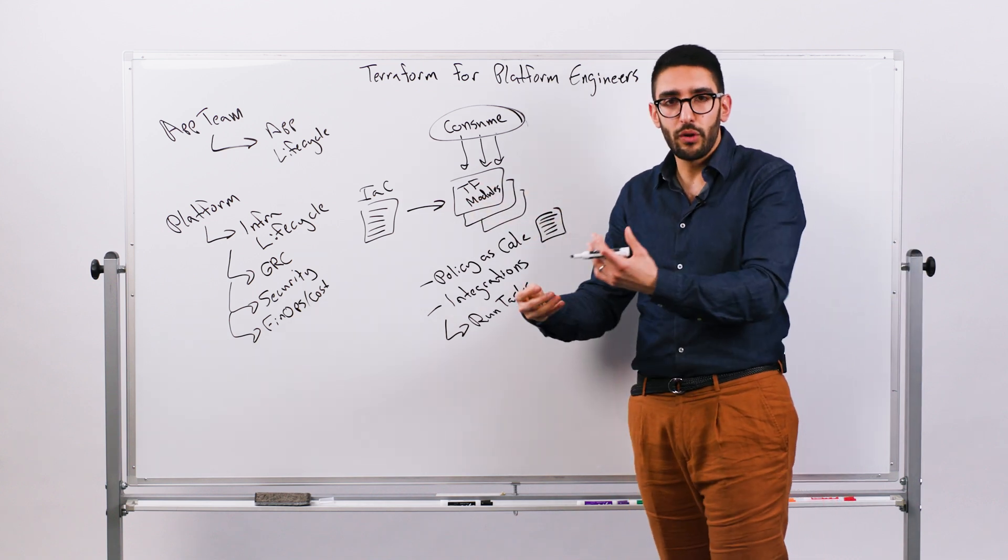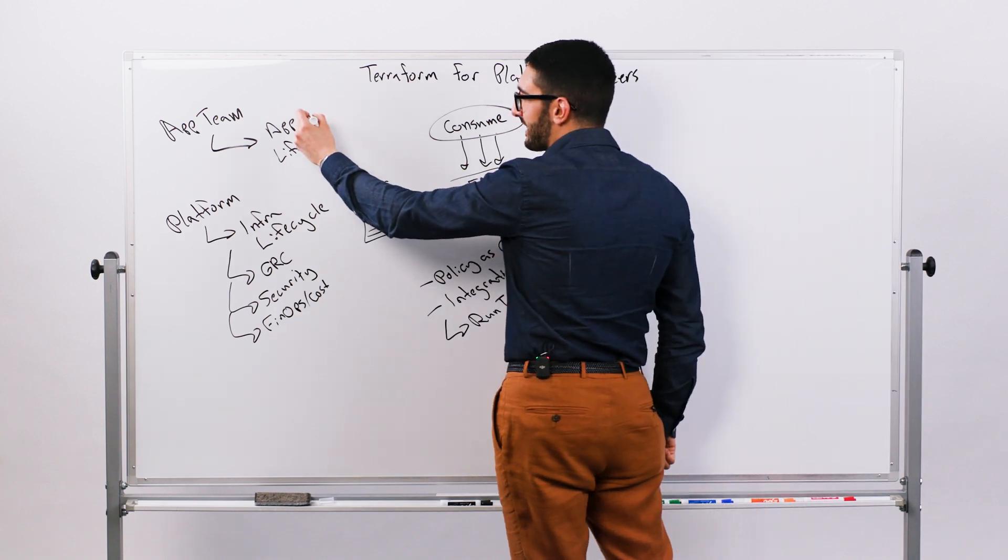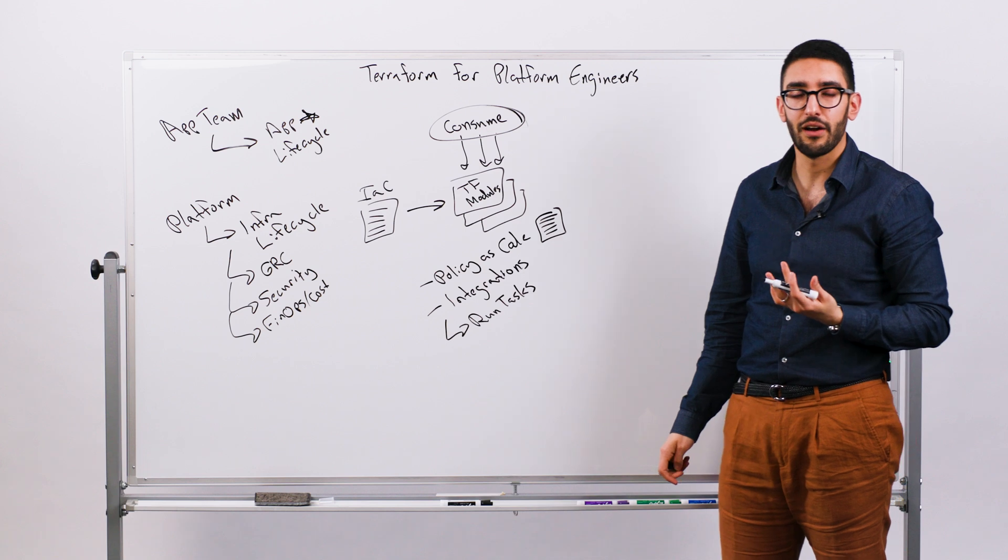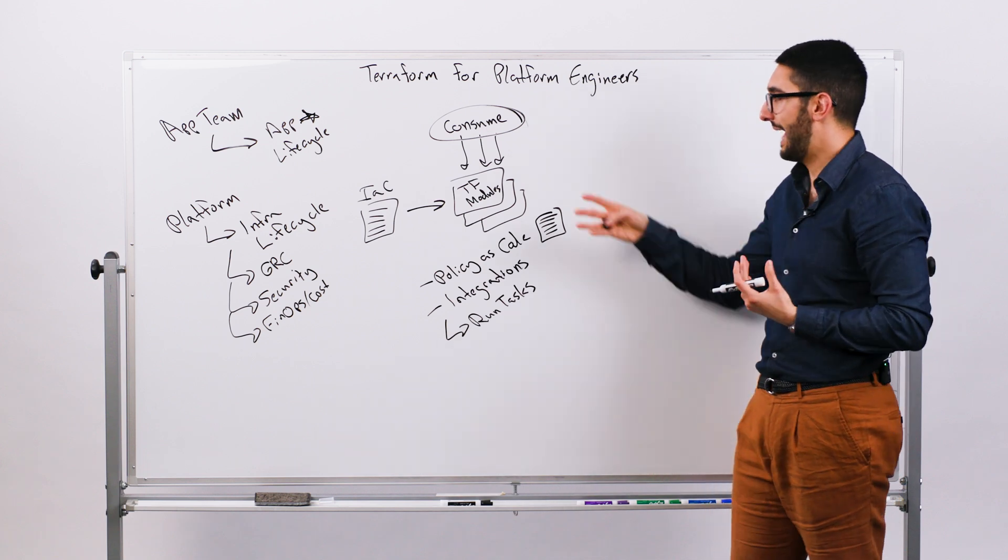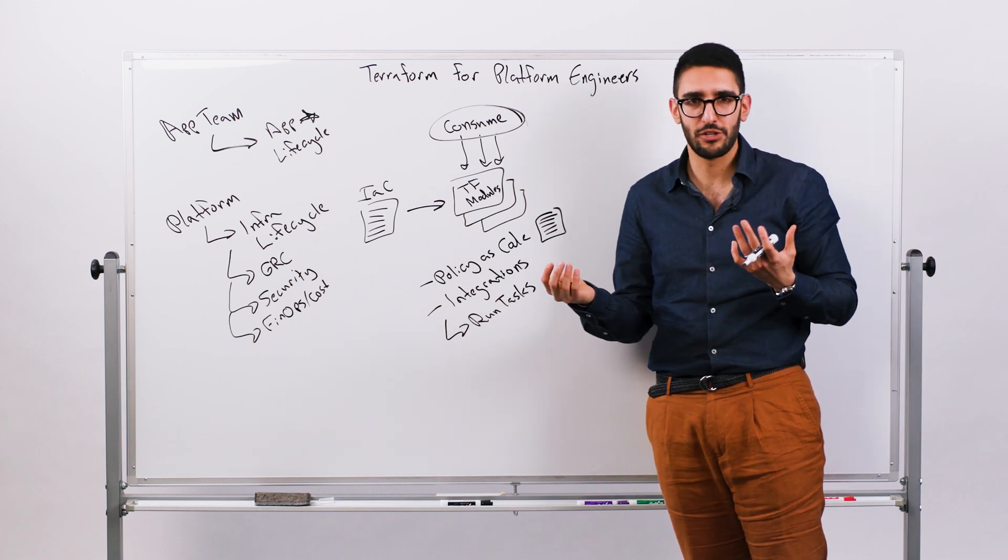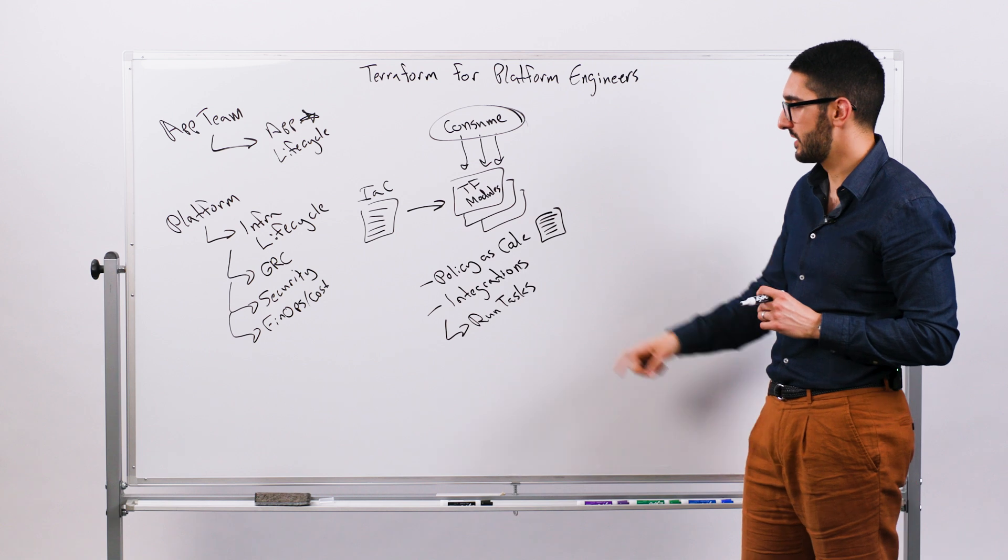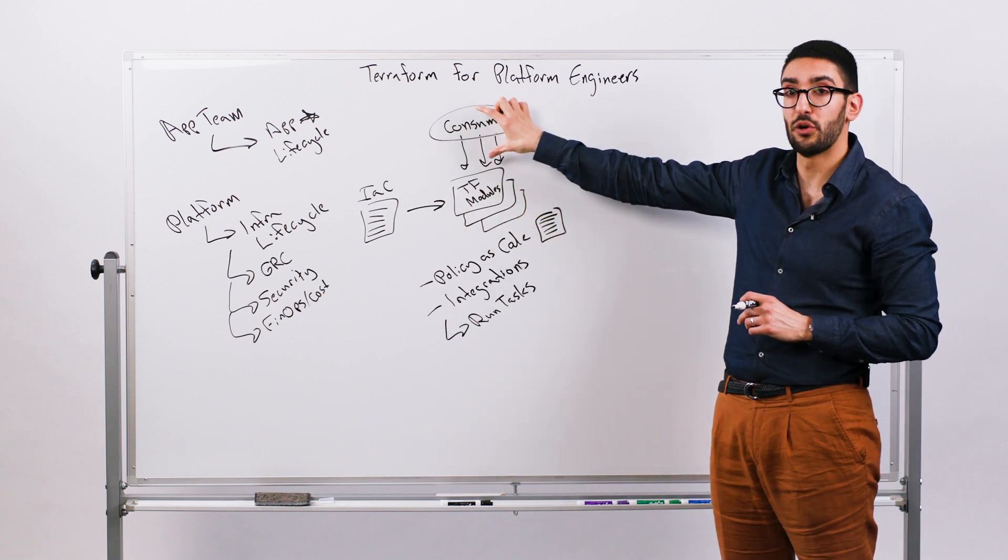Then as we think about even going one step further, ultimately, for most application teams, it goes back to the fact that what they really care about is their app lifecycle. They actually don't even care about things like infrastructure as code. For many application teams, having to learn something like Terraform is sort of a distraction. They're like, I want to work on my Java app. I could care less how infrastructure as code works or how Terraform works. I still want to be able to consume these modules, but I don't have to necessarily learn Terraform.